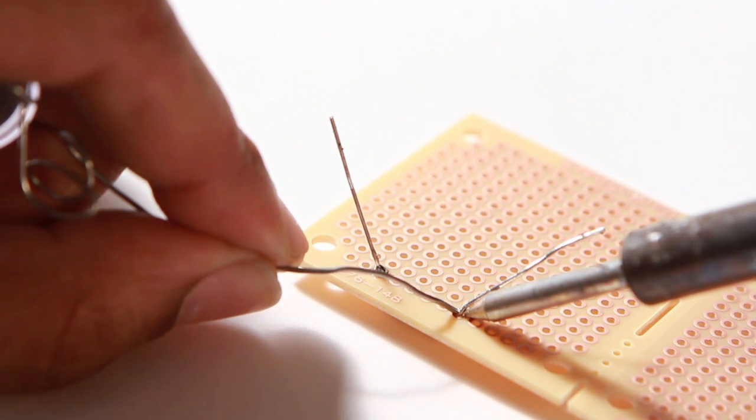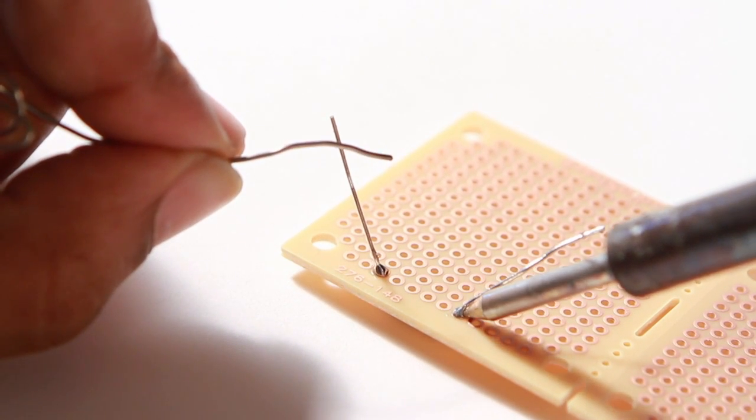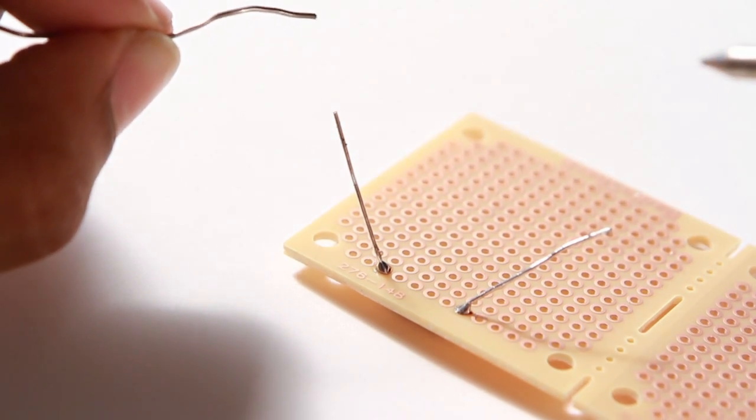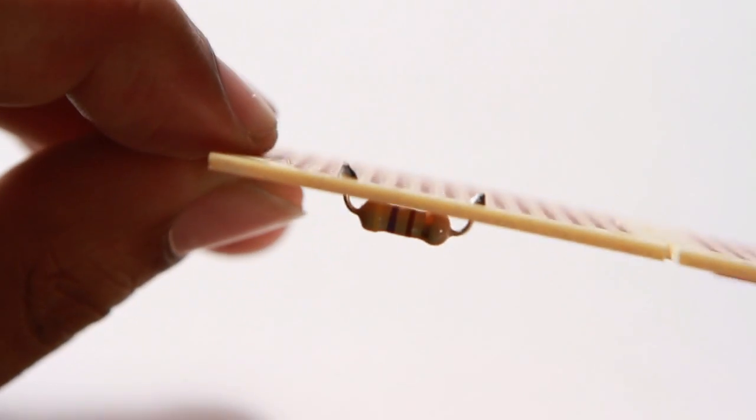The solder should form a smooth pool that's silvery in color, connecting the leads to the PC board. It should be cone-shaped and slightly convex.